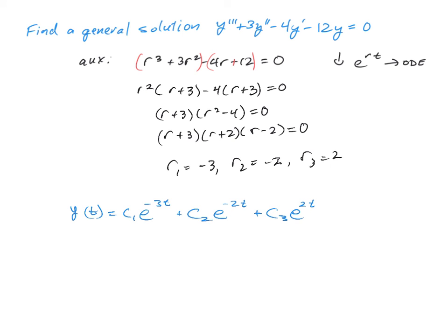Again, these are all linearly independent because we can go ahead and find the wronskian or argue that it's going to be nonzero. That is the solution of this third-order homogeneous linear equation.